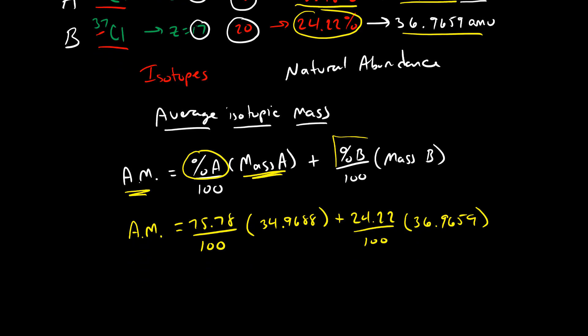So go ahead and pull out a calculator and plug this in. You should come up with the average mass for a chlorine atom equaling 35.45, and the unit is still the atomic mass unit. And if we did our math correctly, then this value should match up perfectly with what we find on our periodic table.